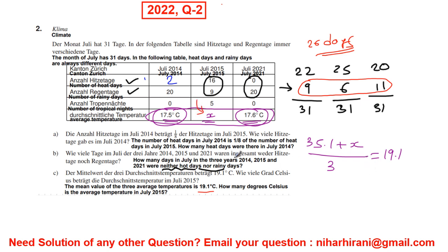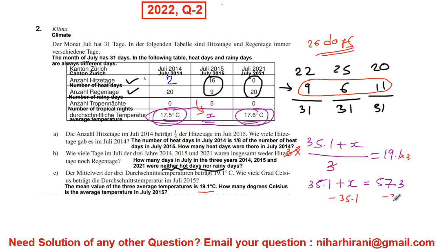Now I have to isolate X to find its value. You need to know how to solve equations here. I will multiply both sides by three: the threes cancel, giving 35.1 plus X equals 57.3. Then subtract 35.1 from both sides: 35.1 minus 35.1 makes zero, so X equals 22.2. That is my answer for C.